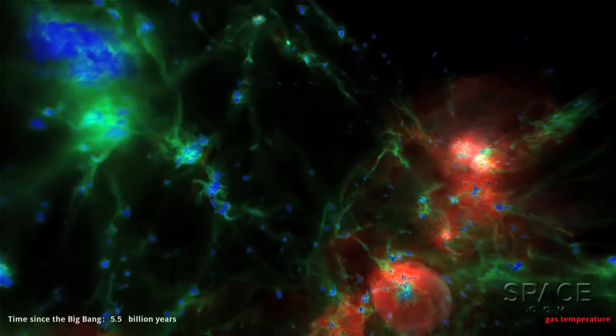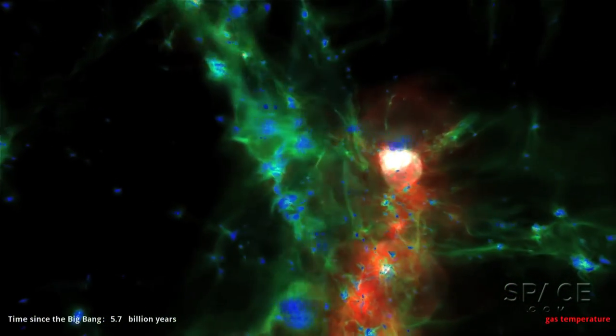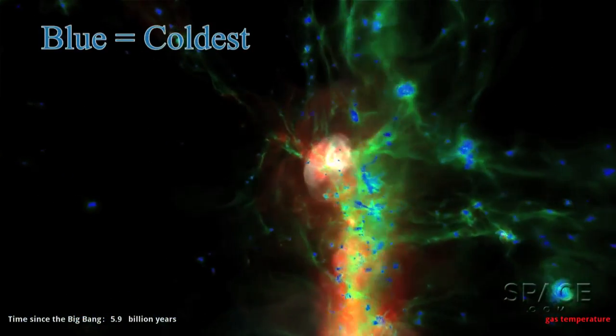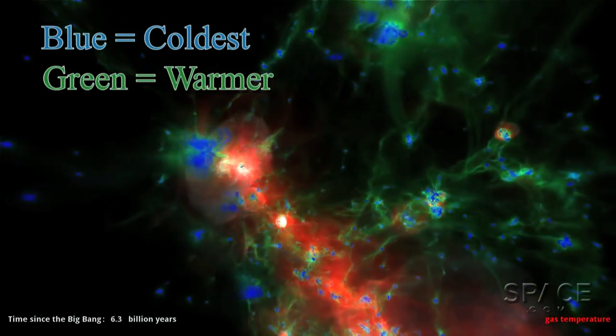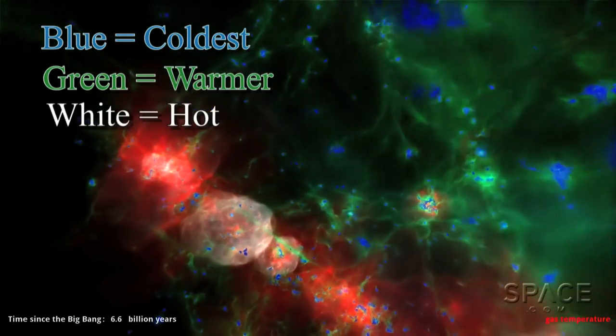We are watching now the temperature as matter under gravity heats up. Blue marks the coldest areas. Greens are warmer. Whites are white-hot.